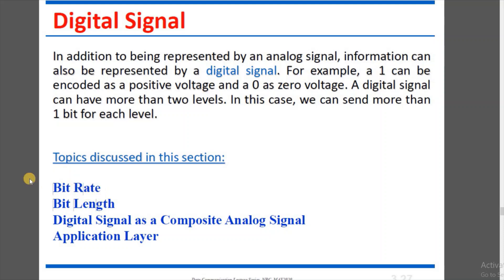The definition of bitrate: the bitrate is the number of bits transmitted per second. Bit length is related to bitrate. The digital signal can also be viewed as a composite analog signal at the application layer. When we apply a composite analog signal, it will be represented and saved by the digital signal.